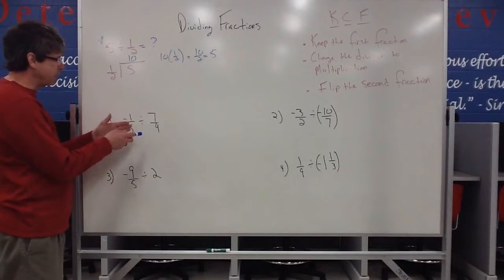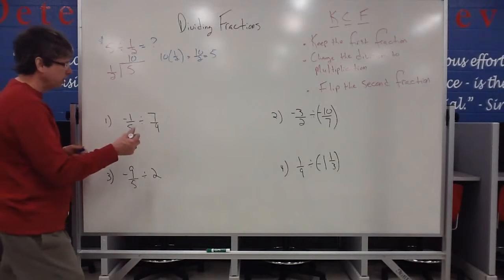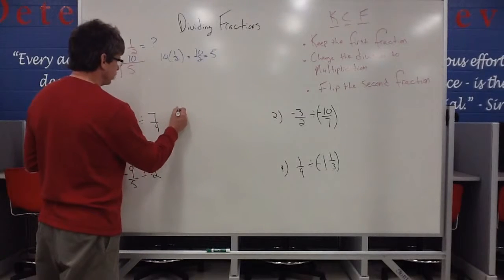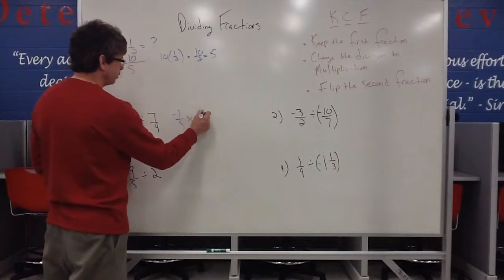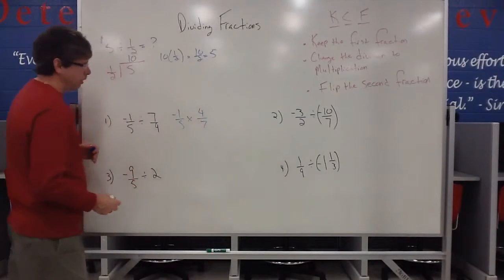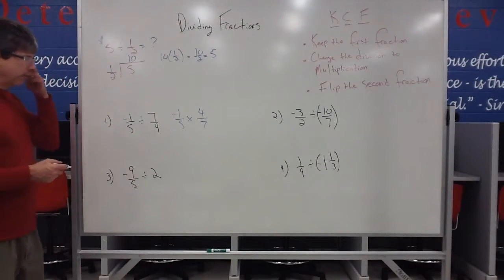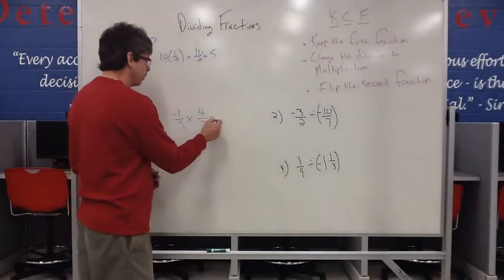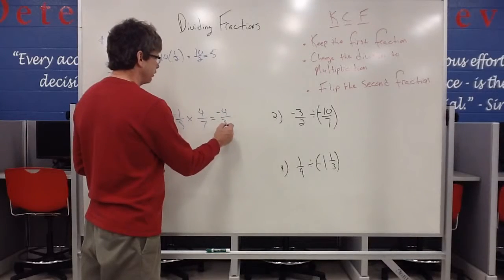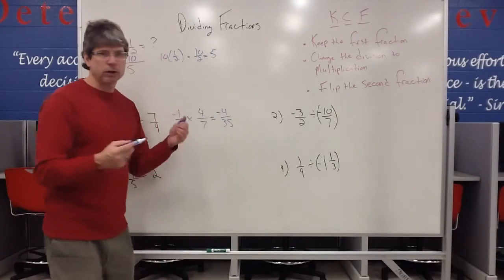So instead of trying to figure out how many seven-fourths go to negative one-fifth, I can just change the problem to negative one-fifth, keep, change to multiplication, and flip that to four-sevenths. And then all I've got to do now is cancel out any like factors. I don't see any like factors happening, so you just multiply straight across, and I would get negative four-thirty-fifths. And there you go.